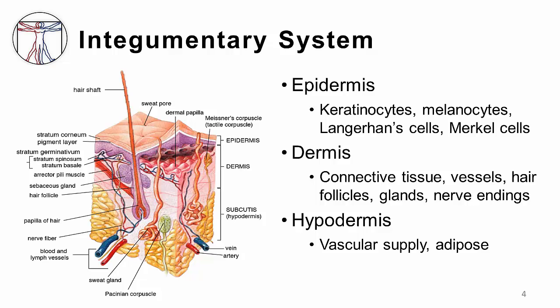Below the dermis, the hypodermis contains the main vascular and lymphatic supply as well as adipose tissue. So when the skin is affected by disease, one or all of these layers may be involved.